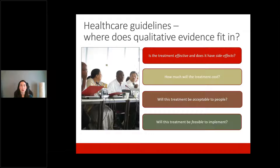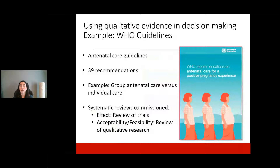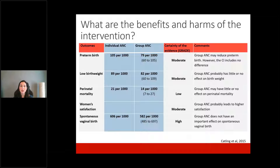In the antenatal care guidelines developed by the WHO, there were 39 recommendations. We're going to focus on the recommendation related to group antenatal care versus individual care. Systematic reviews were commissioned — one looking at effectiveness using a review of trials, and another looking at acceptability and feasibility through a qualitative evidence synthesis. The effectiveness review found promising results for preterm birth, low birth weight, perinatal mortality, women's satisfaction, and spontaneous vaginal birth, with a range of certainty in the evidence and no apparent negative side effects.